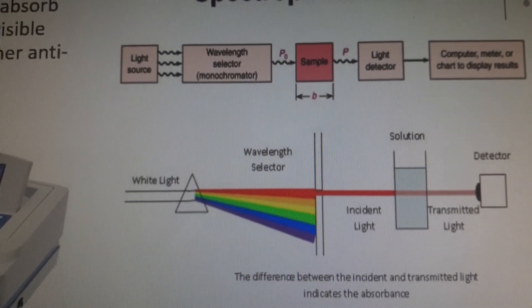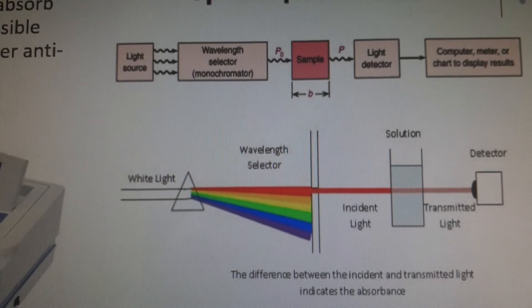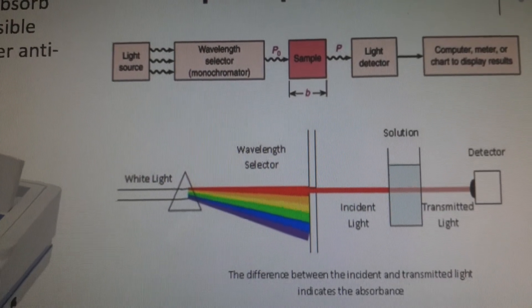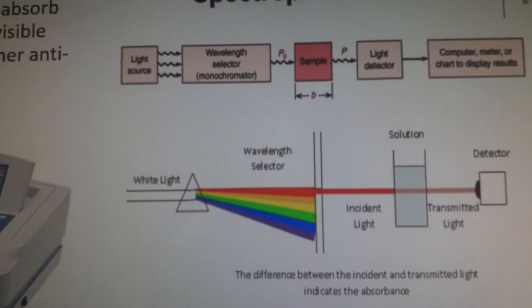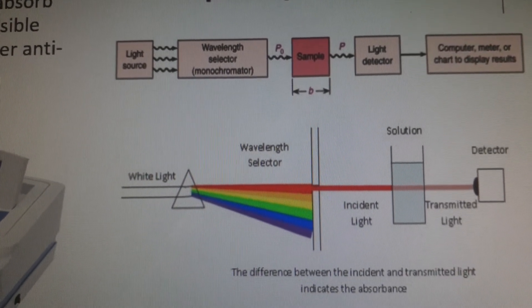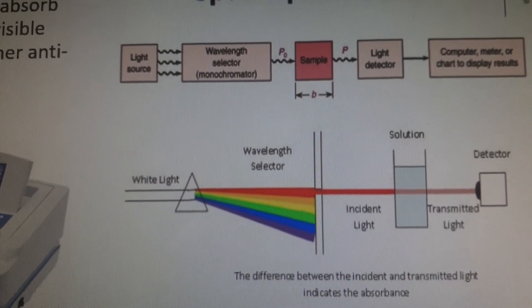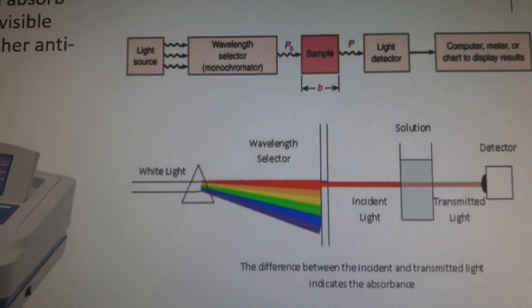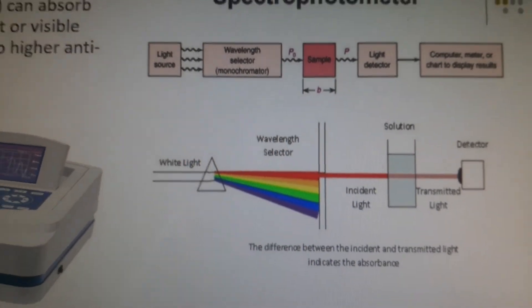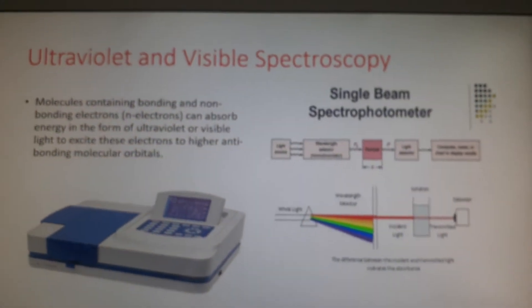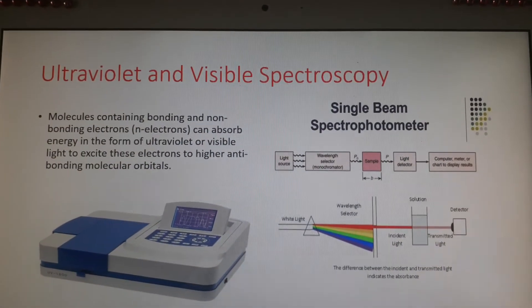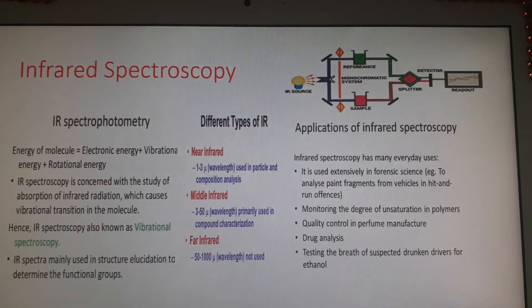After passing through the sample, the light reaches the detector, which passes the signal to a computer. This is how ultraviolet and visible spectroscopy works.